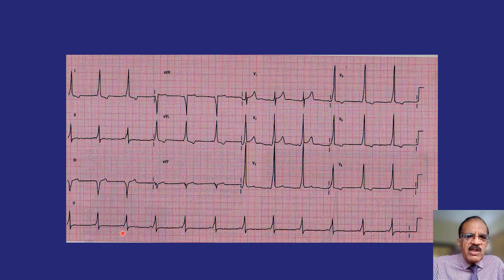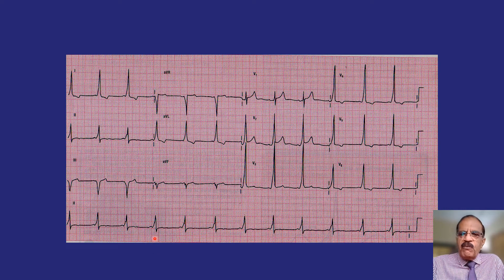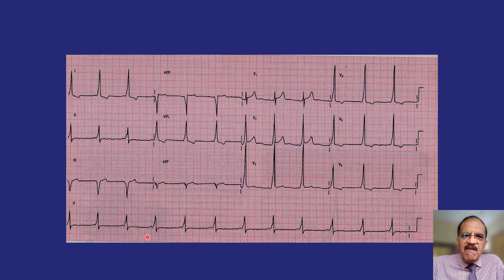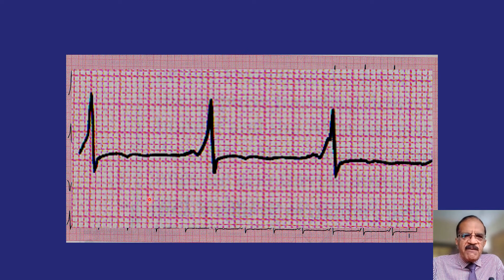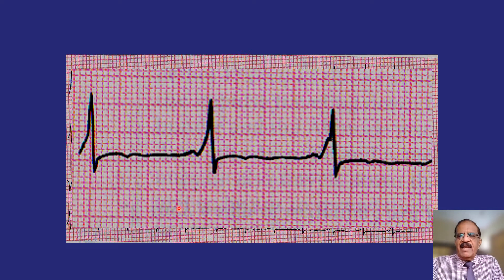Focus on this portion: there is a P wave followed by hardly any PR interval, and immediately the QRS starts with a very different morphology — as if some additional wave has been added to the initial part of the QRS complex. In a normal QRS complex the PR interval would be here, and QRS would start normally; but in this case an extra wave appears to have been added.